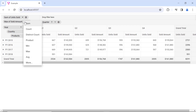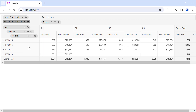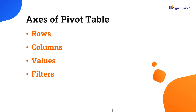In addition to rows, columns, and value axes, there's a filter axis. Fields can be added to it through code or by dragging and dropping. This axis filters the row, column, and value fields in the pivot table, as well as records not bound to the pivot table data source.